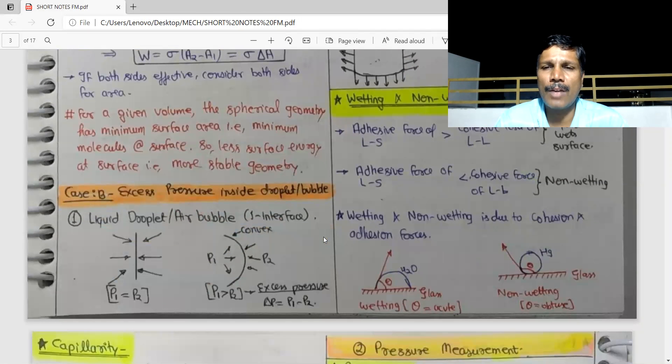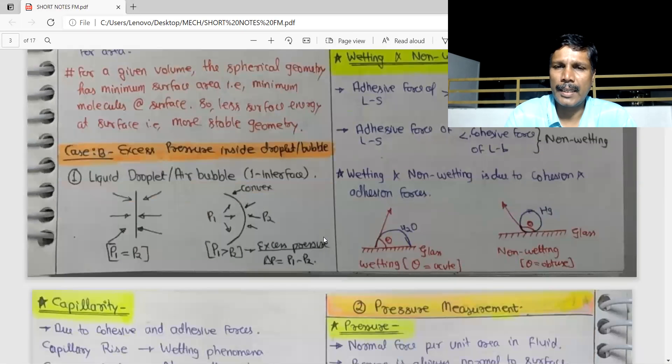The wetting liquid and non-wetting liquid will form an acute angle, so the non-wetting liquid will form an obtuse angle. It's 128 degrees. Pure water is 0 degrees.